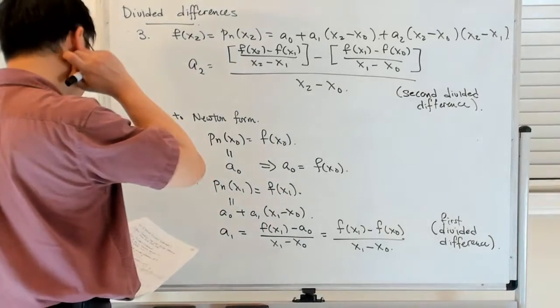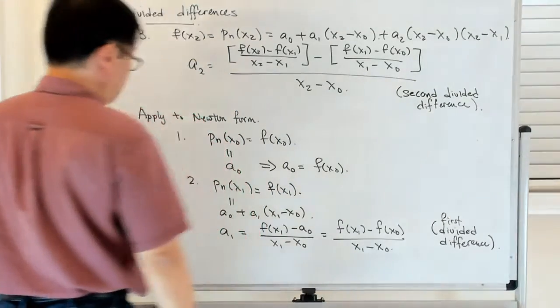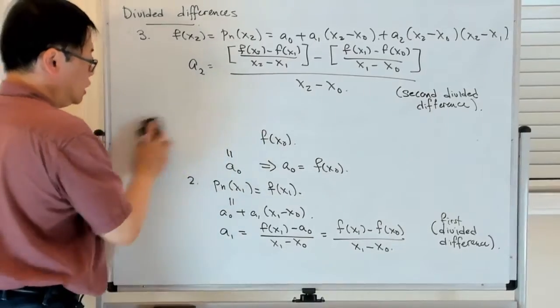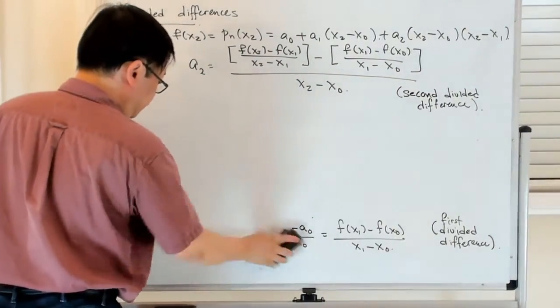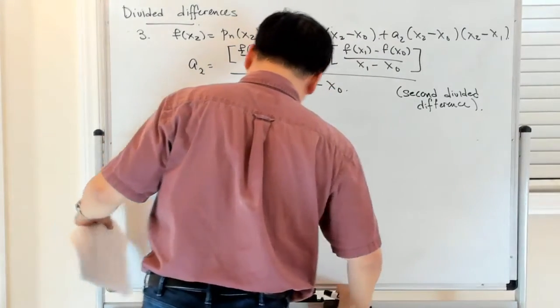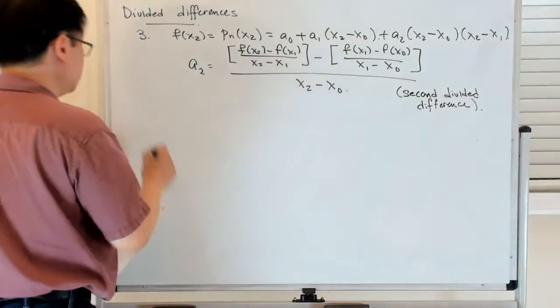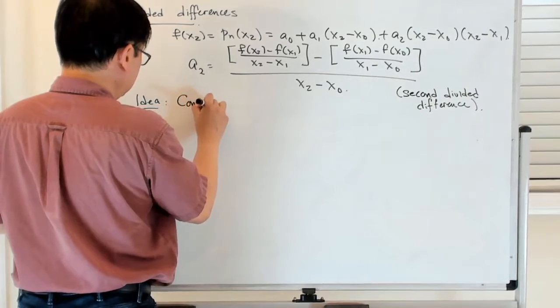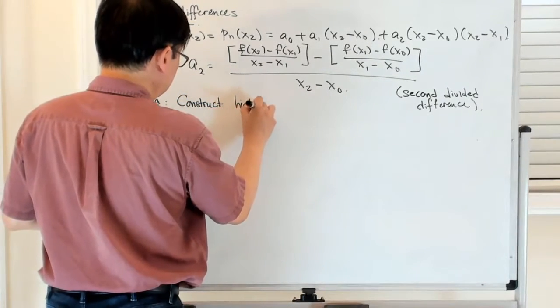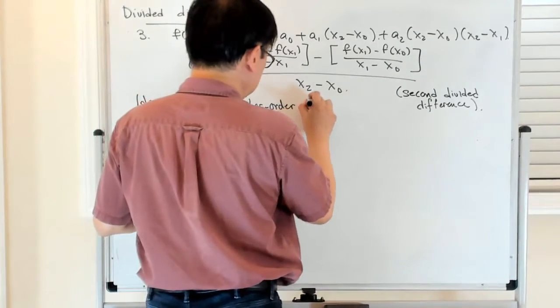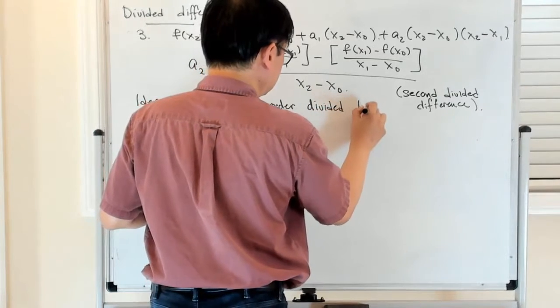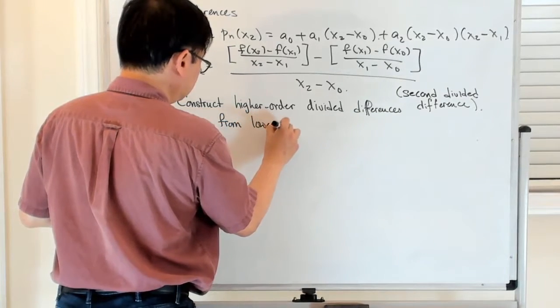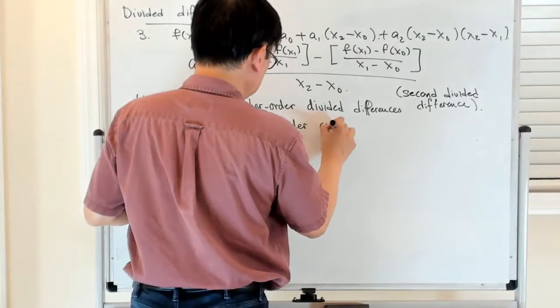So you can keep going through this, and what you'll find is that you get more and more data. So you can see if you follow this procedure that there is a structure to this. So the idea is the following, that you construct higher order divided differences from lower order ones.